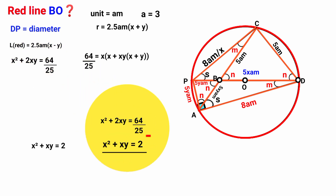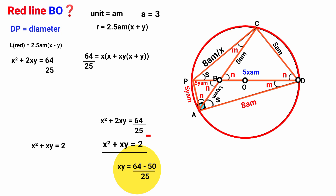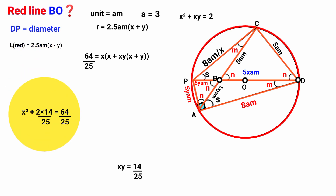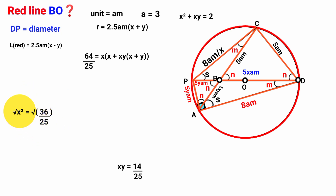This Y cancels, giving 2 = X(X + Y), which means X² + XY = 2. Subtracting this from our first equation X² + 2XY = 64/25: X² − X² = 0, and 2XY − XY = XY. Then 64/25 − 2 = (64 − 50)/25 = 14/25. So XY = 14/25. Substituting back: X² + 2(14/25) = 64/25, giving X² = 64/25 − 28/25 = 36/25. Taking the square root: X = 6/5.